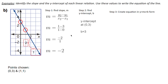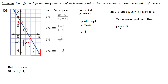Now we want to find the y-intercept, which is at the point (0, 3), so we have a b value of 3. Using what we've found — m equals negative 2 and b equals 3 — then y equals negative 2x plus 3.